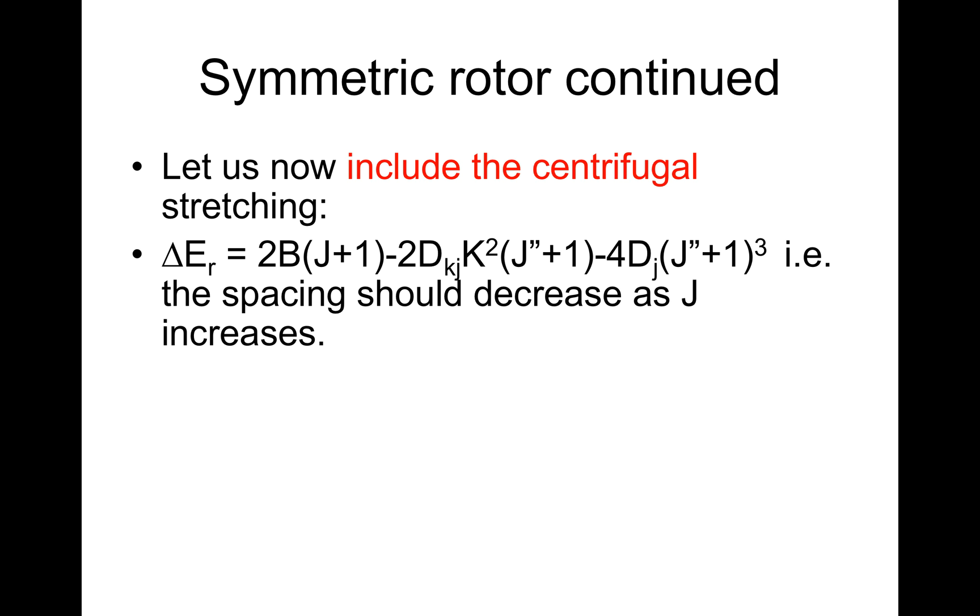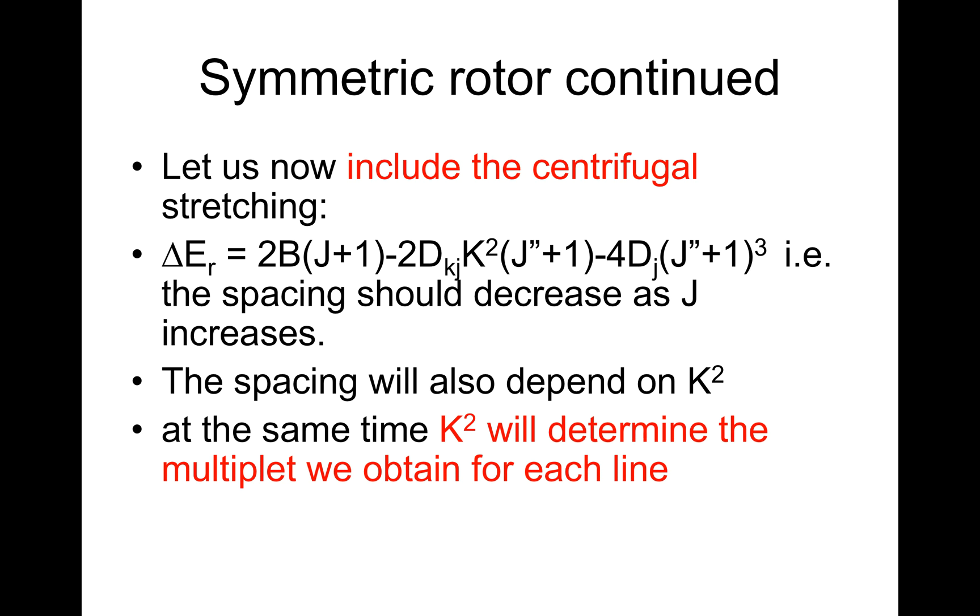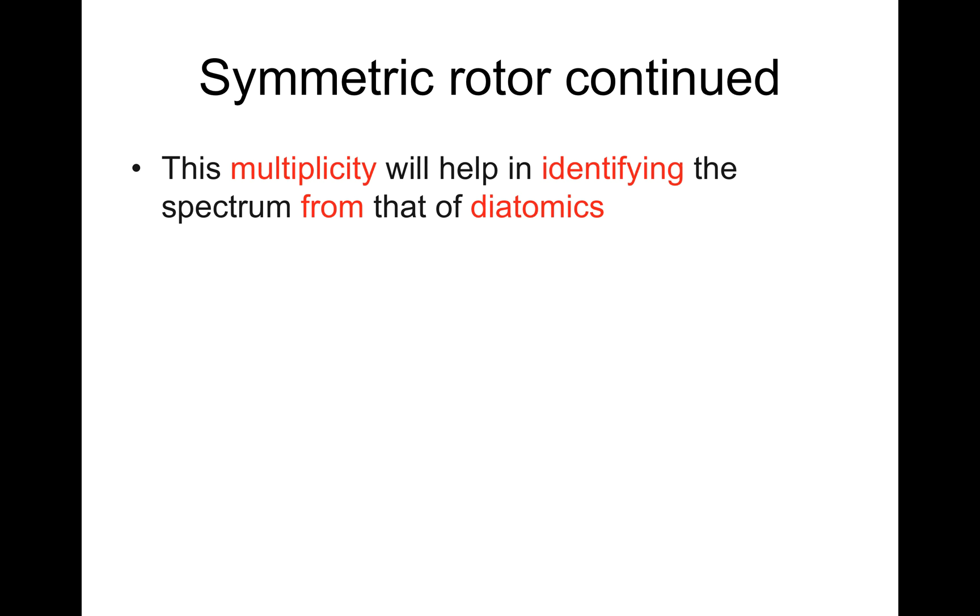Let us now include the centrifugal stretching. Of course, that means ΔER now equals 2B(J+1) minus 2DKJ(J″+1)³. The spacing should decrease as J increases. The spacing will also depend on K². At the same time, K² will determine the multiplicity we obtain for each line, i.e. the fine structure (splitting of the lines).